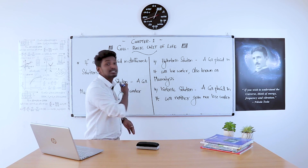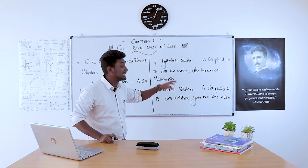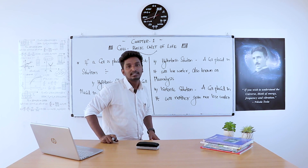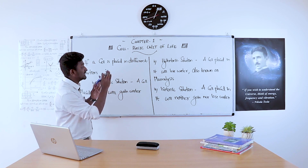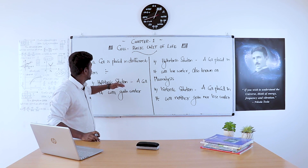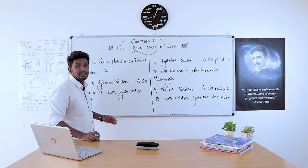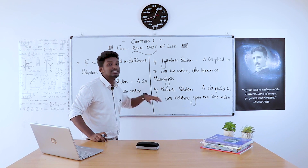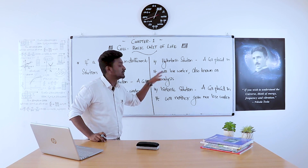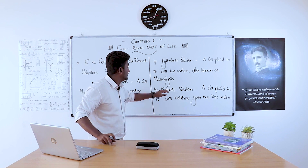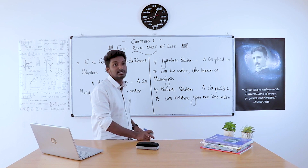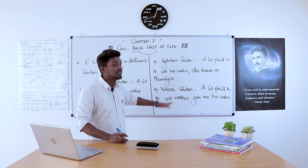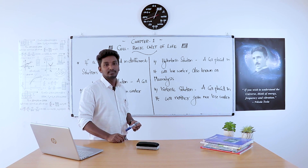When the cell is placed in an isotonic solution, the cell will neither gain nor lose water — so nothing happens to the cell. To summarize: hypotonic solution → cell gains water; hypertonic solution → cell loses water (plasmolysis); isotonic solution → no change.